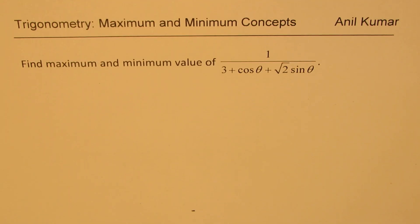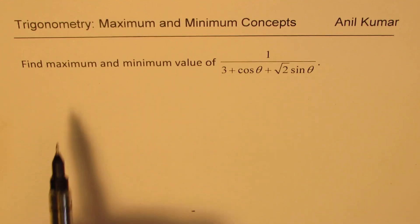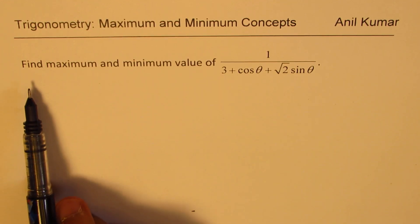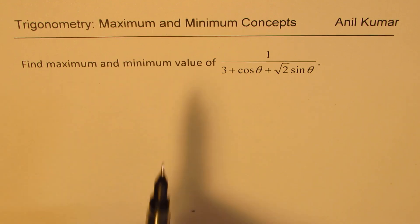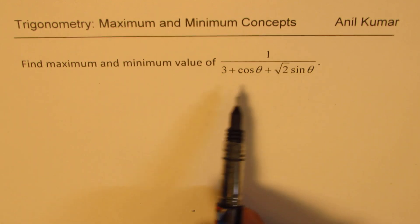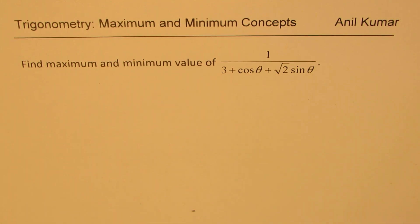I am Madhul Kumar sharing with you an excellent question on maximum and minimum of a trigonometric function. The question is: find the maximum and minimum value of 1 over 3 plus cos θ plus √2 sin θ. I would like you to pause the video, answer the question, and then look into my suggestions.